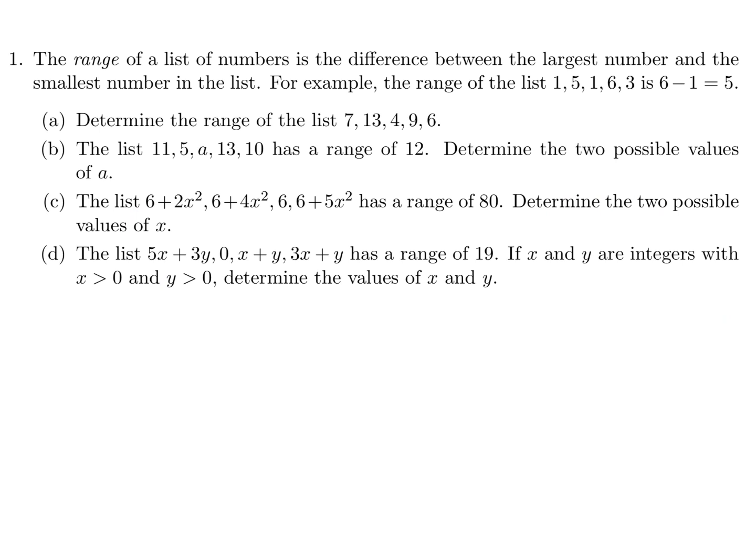The range of a list of numbers is the difference between the largest and the smallest. For example, the range of the list 1, 5, 1, 6, 3 is 6 minus 1, which is 5.